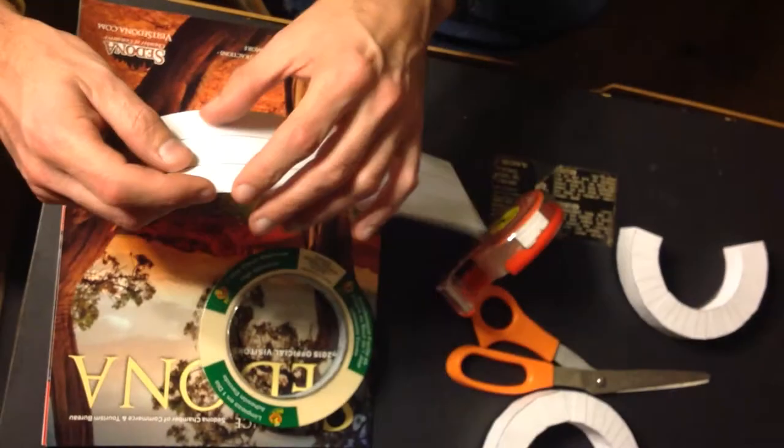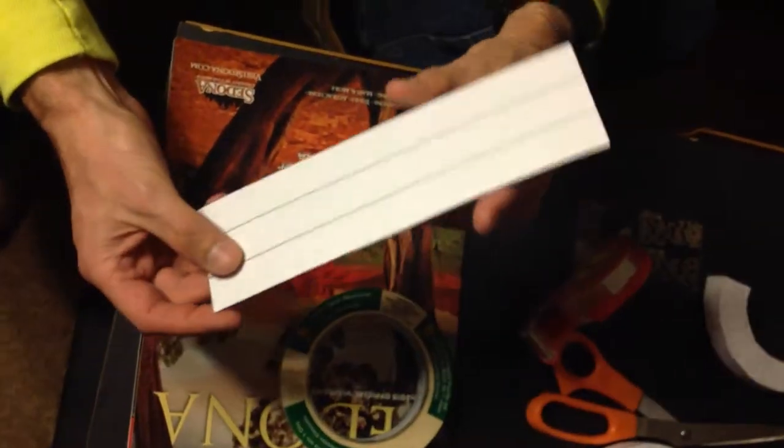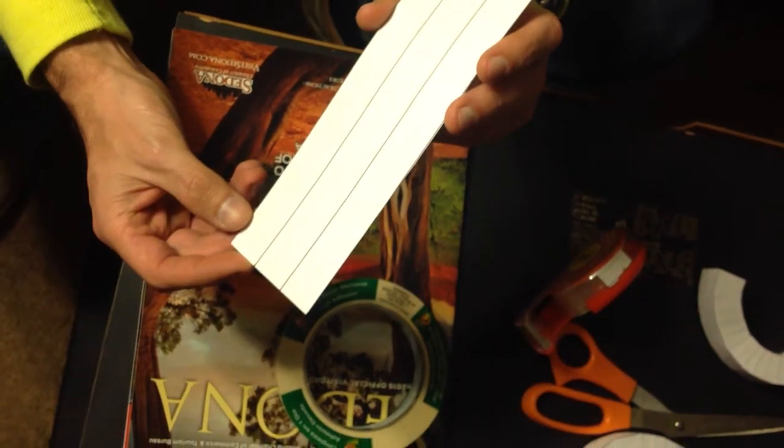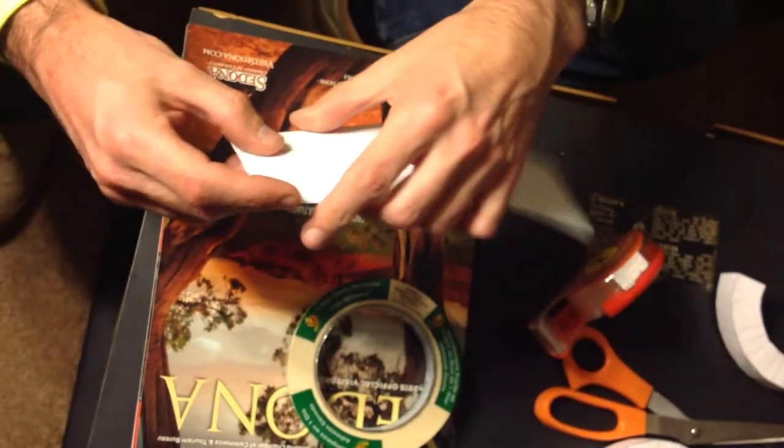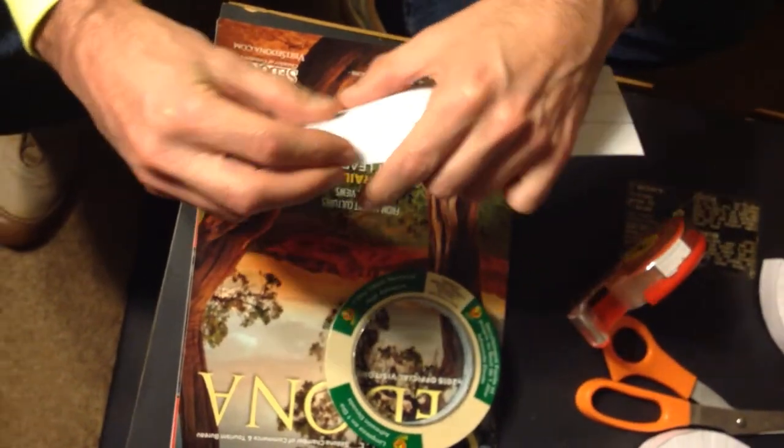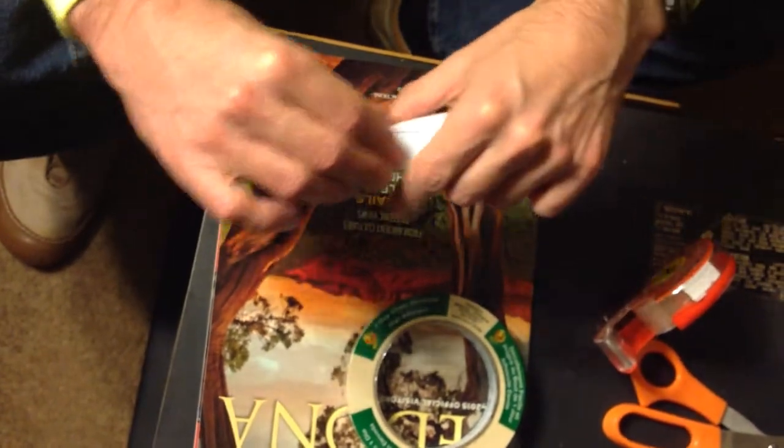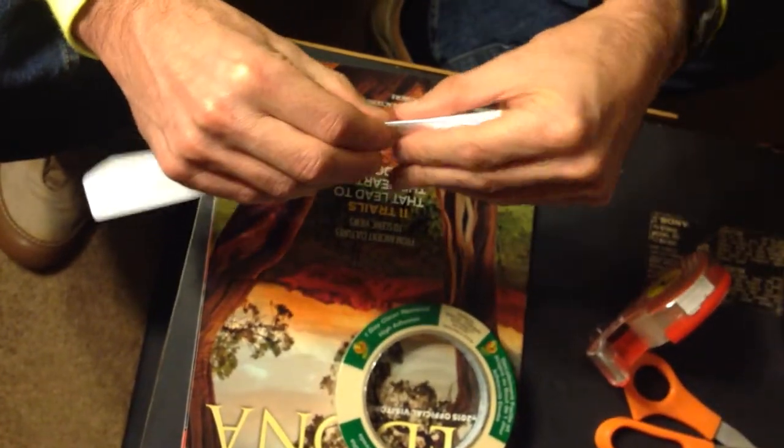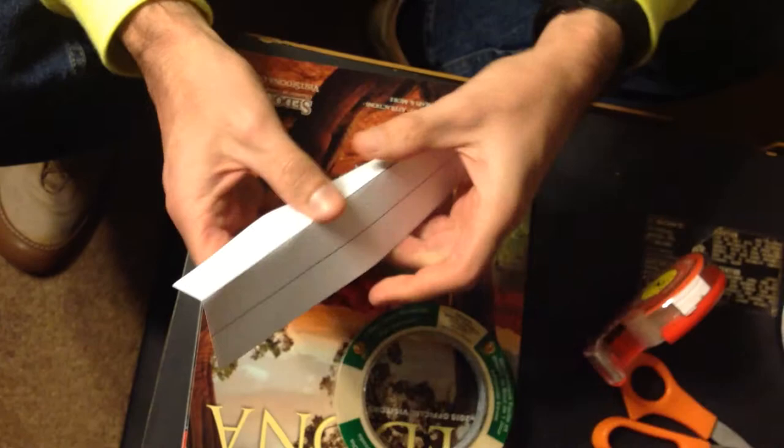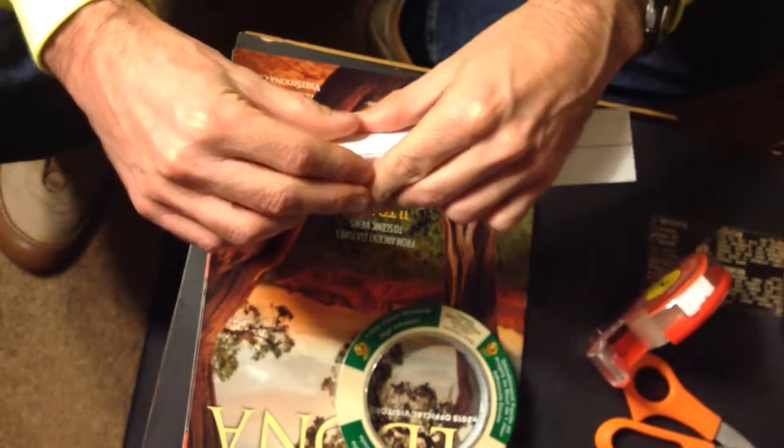We're gonna learn how to make a loop. We start from a normal track like this. We fold it like this.